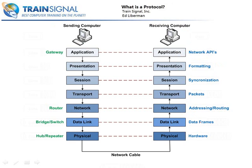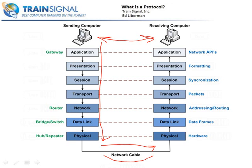Now that you know what functionality takes place at each layer, we need to learn how data travels through the OSI model. In this illustration, you'll notice two computers drawn above the OSI model, and the network cable is at the bottom. The computers are at the top and the connection is at the bottom because in order for data to get from a sending computer to a receiving computer, it must first go down through the OSI model to reach the network connection, travel across the network, and then go up through the OSI model to reach the receiving computer. The sending computer always sends data down through the OSI model; on the receiving side, it always goes up.